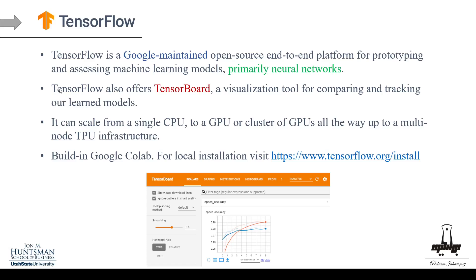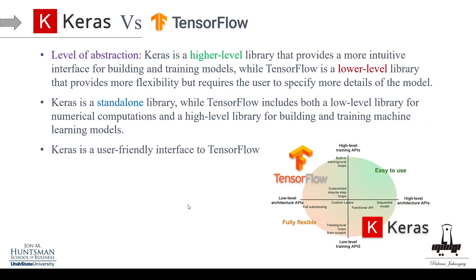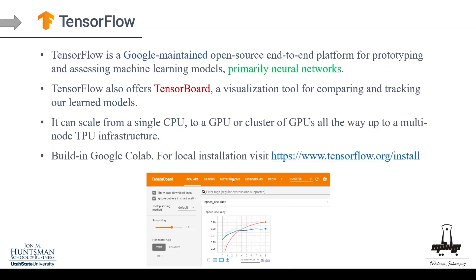TensorFlow also offers something called TensorBoard, which helps you visualize whatever you're doing. Here's a snapshot of TensorBoard — it's a visualization tool for comparing and tracking your learned models. For example, we can look at epoch accuracy for different epochs, and see the accuracy in the train set, test set, and cross-validation version. These are very cool features.